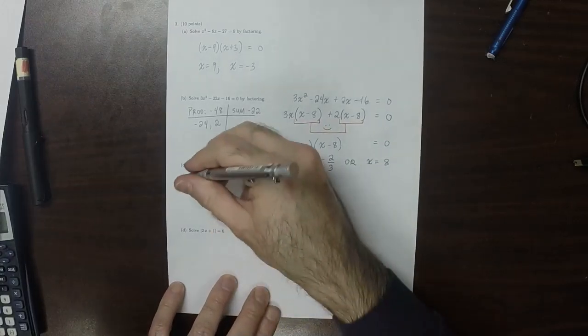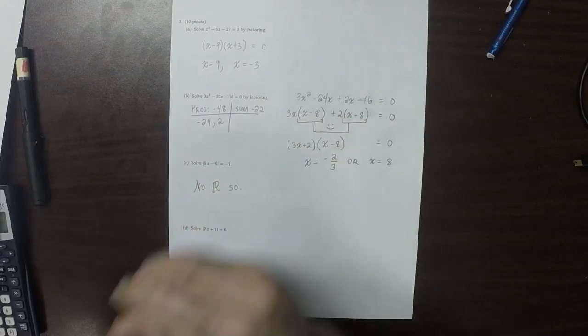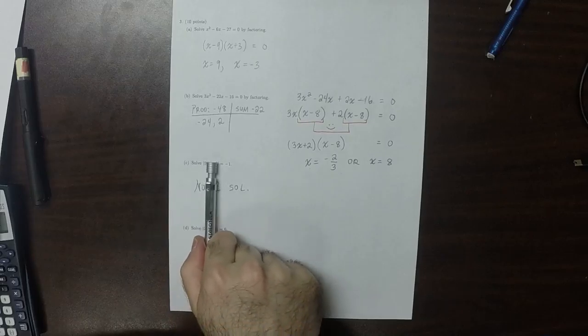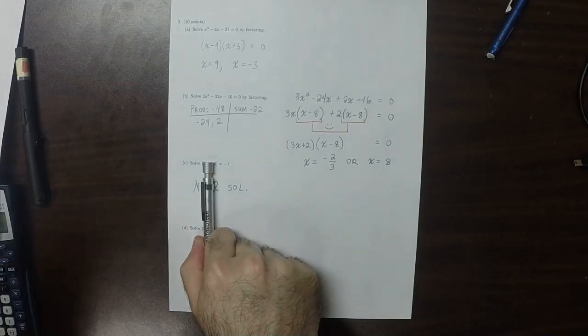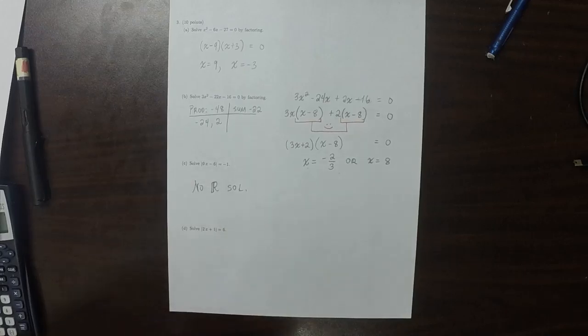As for this one, there can be no real solution because there's nothing you can put into the absolute value so that negative 1 would come out.